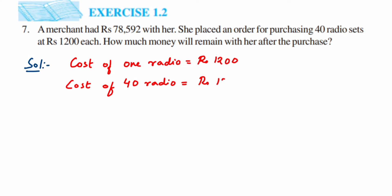We know 12 fours are 48, so we get 48 thousand. We have two zeros from 1200 and one zero from 40, so just put those zeros — it's 48,000. If it's confusing, you can multiply separately on the side. So the total cost for 40 radios is rupees 48,000.